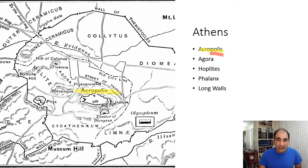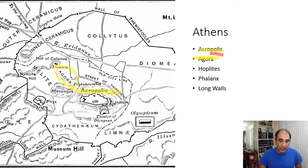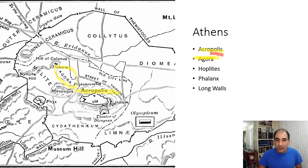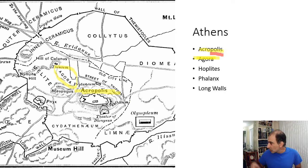A second thing that every single Greek city-state had was an agora. What's an agora? The agora is further down here on the map. Another example of a word we have in English that comes from this: some of you may be familiar with agoraphobia — fear of crowded or open places. The agora is a big open place, but for the Greeks specifically it was a marketplace where they would go and buy things.